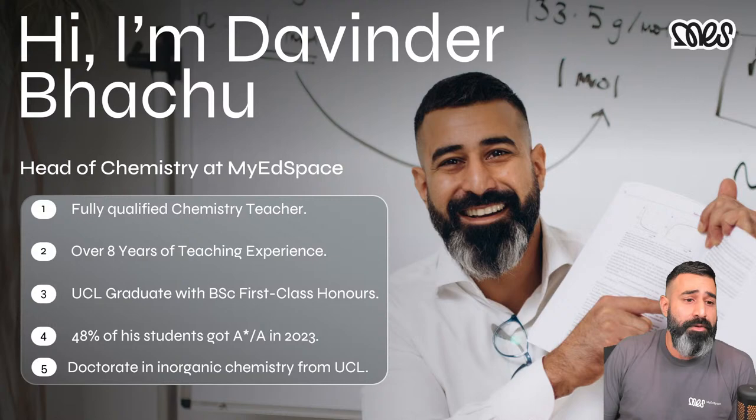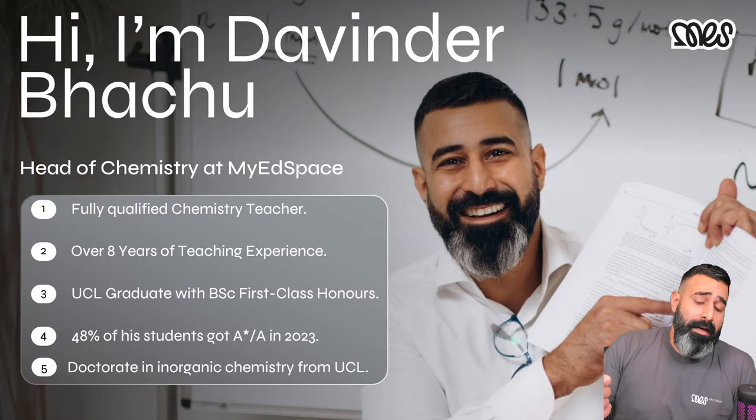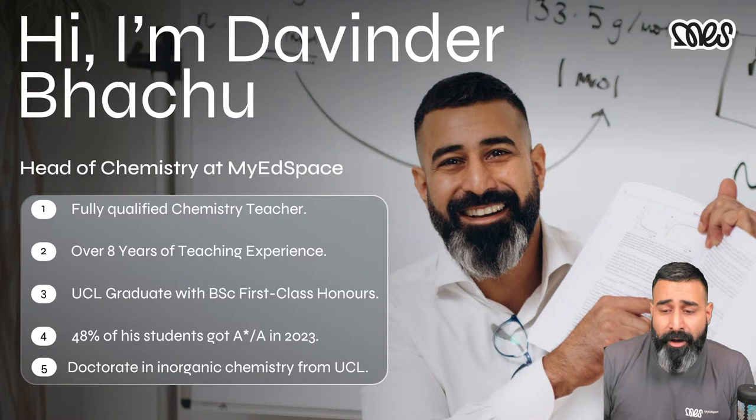Thanks for telling me a little bit about yourselves. I'm going to talk to you about who I am because I think it's really important that you know some of the credentials about the person talking to you about acids and bases. So my name's Devinder. I'm the head of chemistry here at MyEdSpace and I'm a fully qualified chemistry teacher with over eight years of experience. Last year, my exam class in year 13, they got 48% of the students got an A star or an A, which is a fantastic achievement. I'm a UCL graduate with a bachelor's in chemistry and I got a first class in my degree. After that, I stayed on to do a doctorate in inorganic chemistry and materials chemistry also at UCL. I'm also from London. I'm a proud East Londoner.